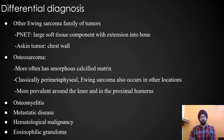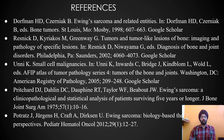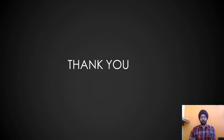Differential diagnoses include the Ewing sarcoma family of tumors, PNET and Askin tumors, osteosarcoma — which more often has amorphous calcified matrix and is more prevalent around the knee and proximal humerus — as well as osteomyelitis, metastatic disease, hematological malignancy, and eosinophilic granuloma. Here are the references. Thank you so much.